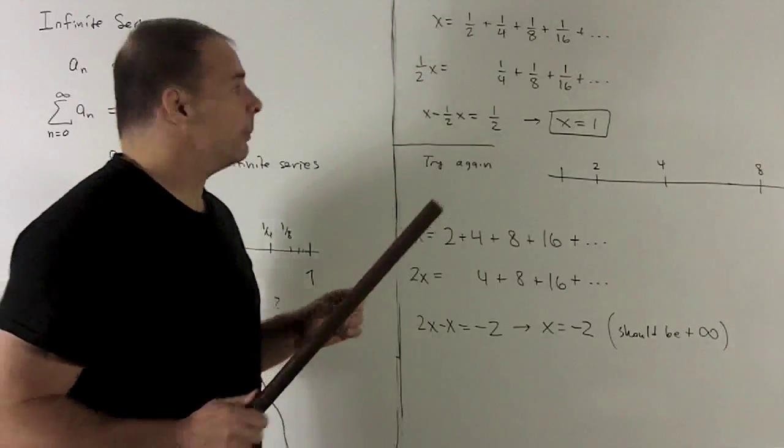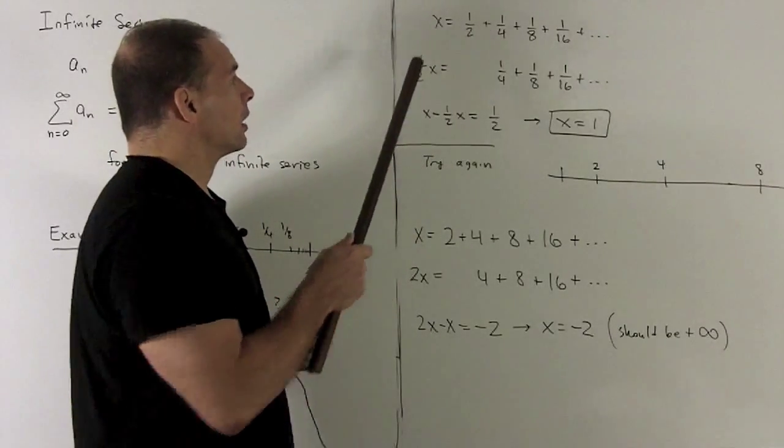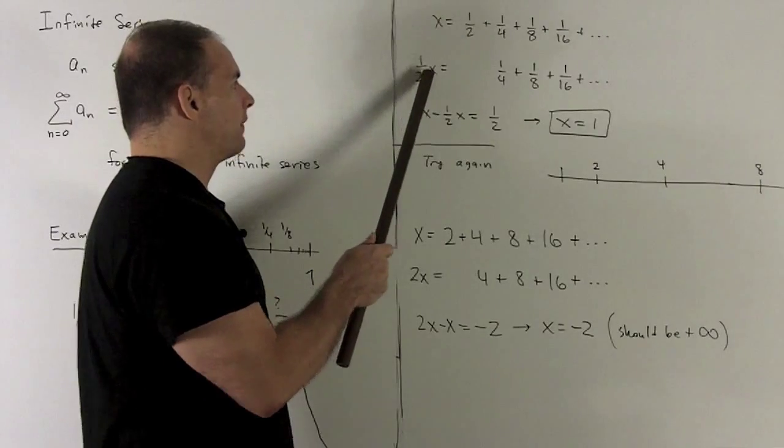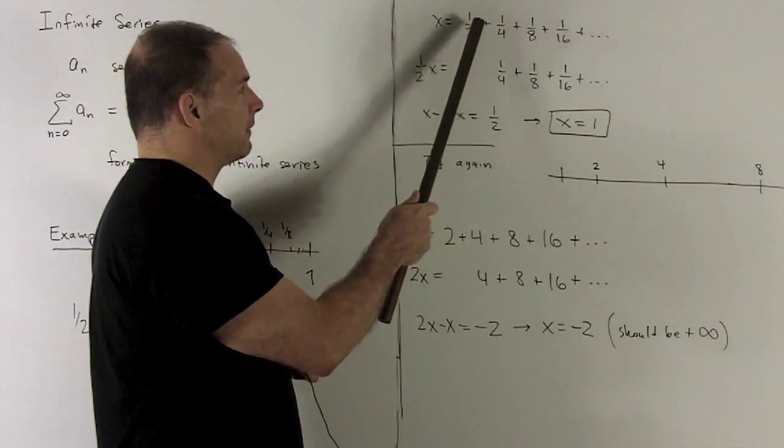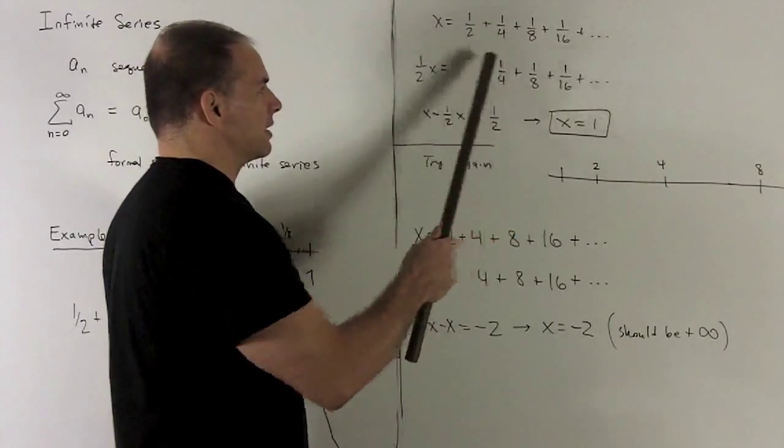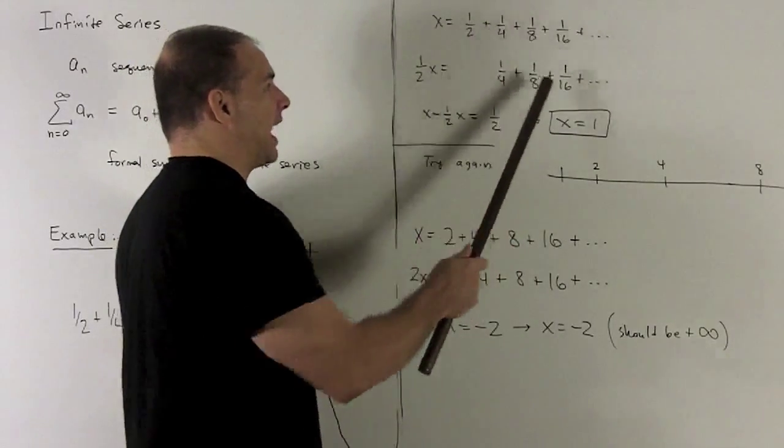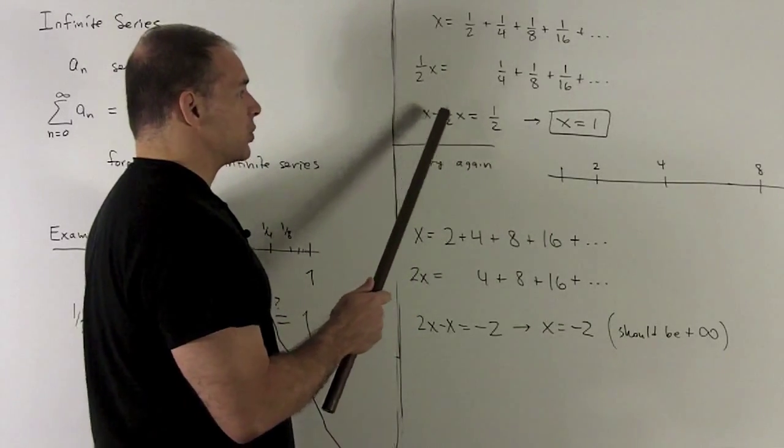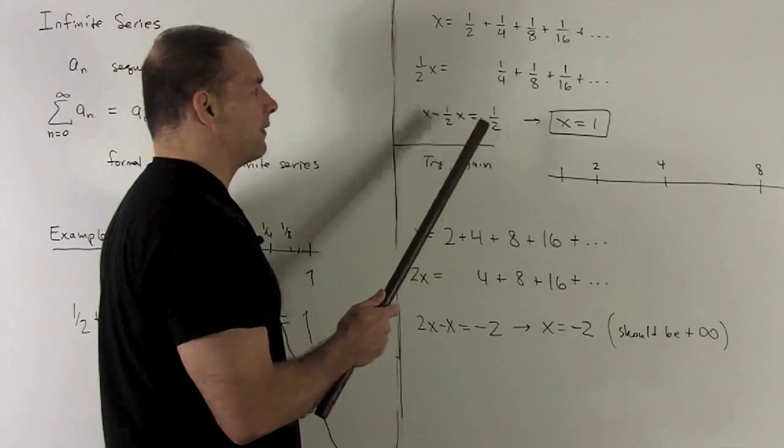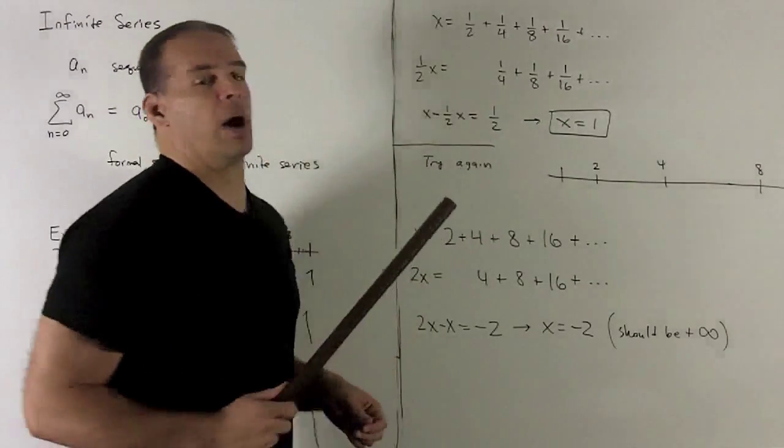Now what I'm going to do, I'm going to take the difference on both sides. So if I take x minus 1 half x, that gives me this. On this side, it's going to be the effect of this whole thing minus this thing. These are all going to cancel, and I'll be left with a 1 half. x minus 1 half x gives me 1 half x, equal to 1 half. We're left with an x equal to 1.